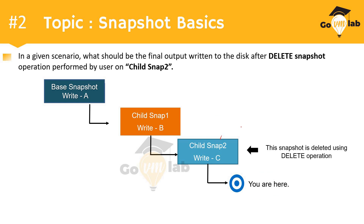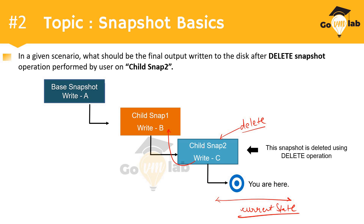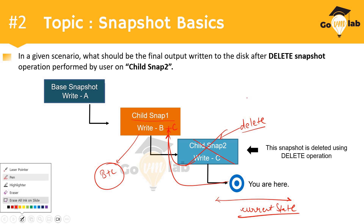When the user performs the delete operation from the current state on child snap 2, the data is returned to the parent disk. The parent disk of child snap 2 is child snap 1 — and that's where the data will be written: B plus C. Child snap 1 will now have B plus C in its delta disk. Once this data is written successfully, the snapshot is deleted and the current state moves up to child snap 1.